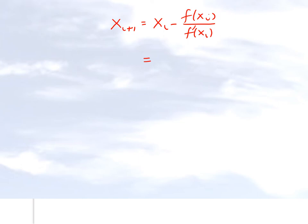That's our Newton-Raphson method formula. And for the example given here, it will be xi cubed minus 20 divided by 3 xi squared.